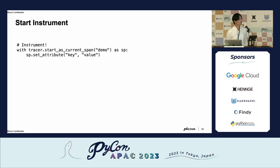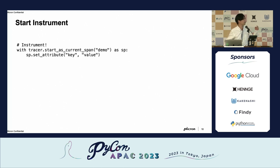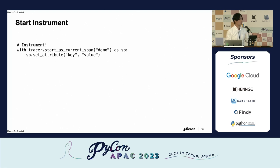After we get the tracer, we can start to instrument our trace data. We use tracer.start_as_current_span to create a span scope, and within this scope we can attach attributes to the span. For example, if you want to record some database information, you can put things like the SQL select statement, how many rows were inserted, or how many rows were returned during this function.